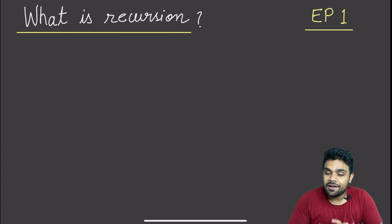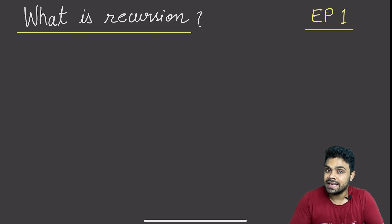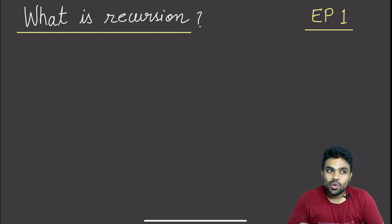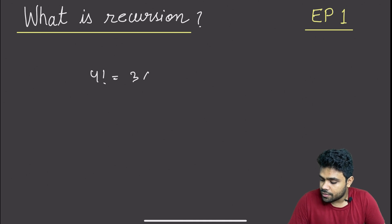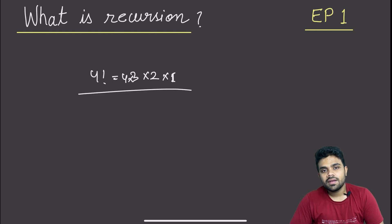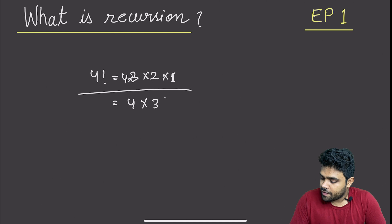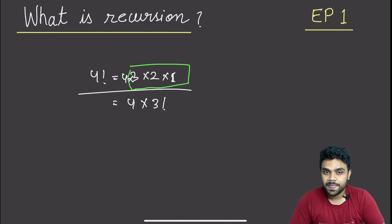Now, what is recursion? A function called into itself is recursion. This is a formal definition which obviously is not going to help us in interviews. So we will understand recursion with the help of an example. Let's say you need to find a factorial of a number. You all know what factorial is. 4 factorial is nothing but 4 into 3 into 2 into 1. Now, 4 factorial can also be written as 4 multiplied by 3 factorial, because this entire part is equal to 3 factorial.